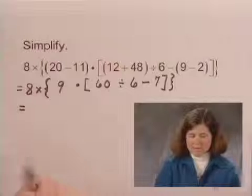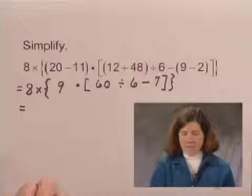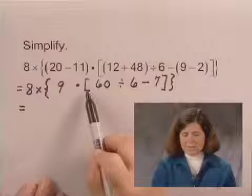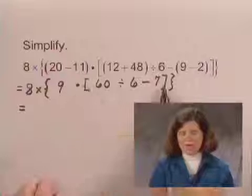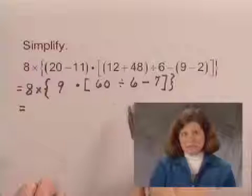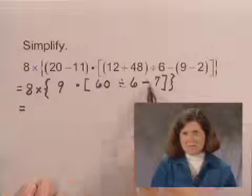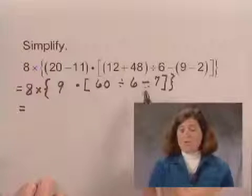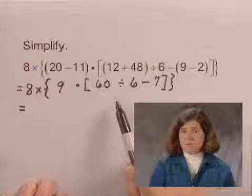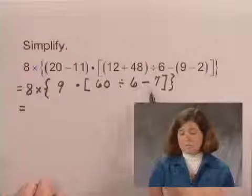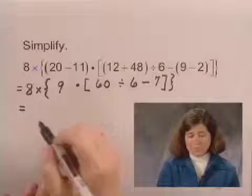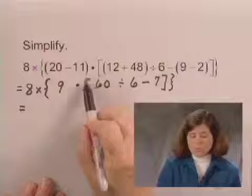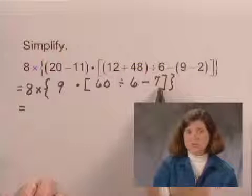On the next line, I'm going to simplify now inside of the brackets. Now that's going to take me a couple of steps because there is a division and a subtraction. The rules for order of operations say to do all multiplications and divisions first, and then do all additions and subtractions in order from left to right. So I'm going to work inside the brackets using the rules for order of operations.